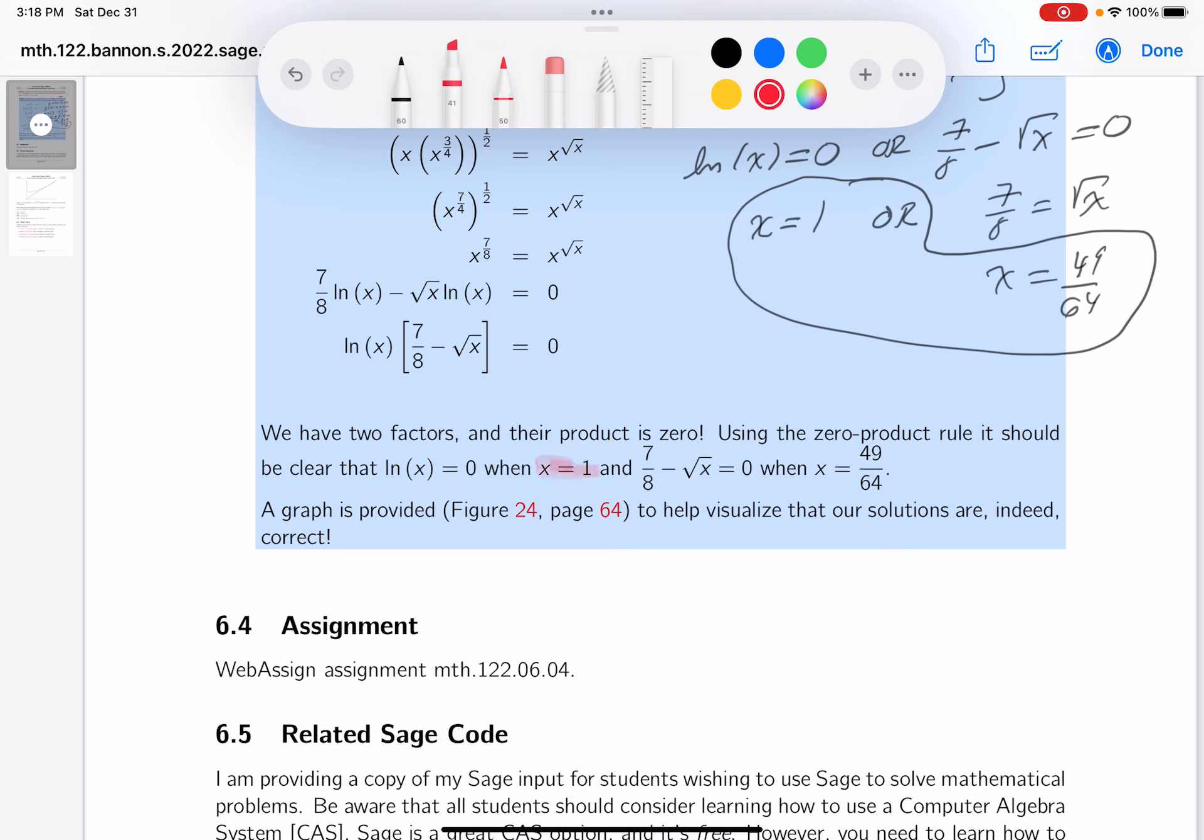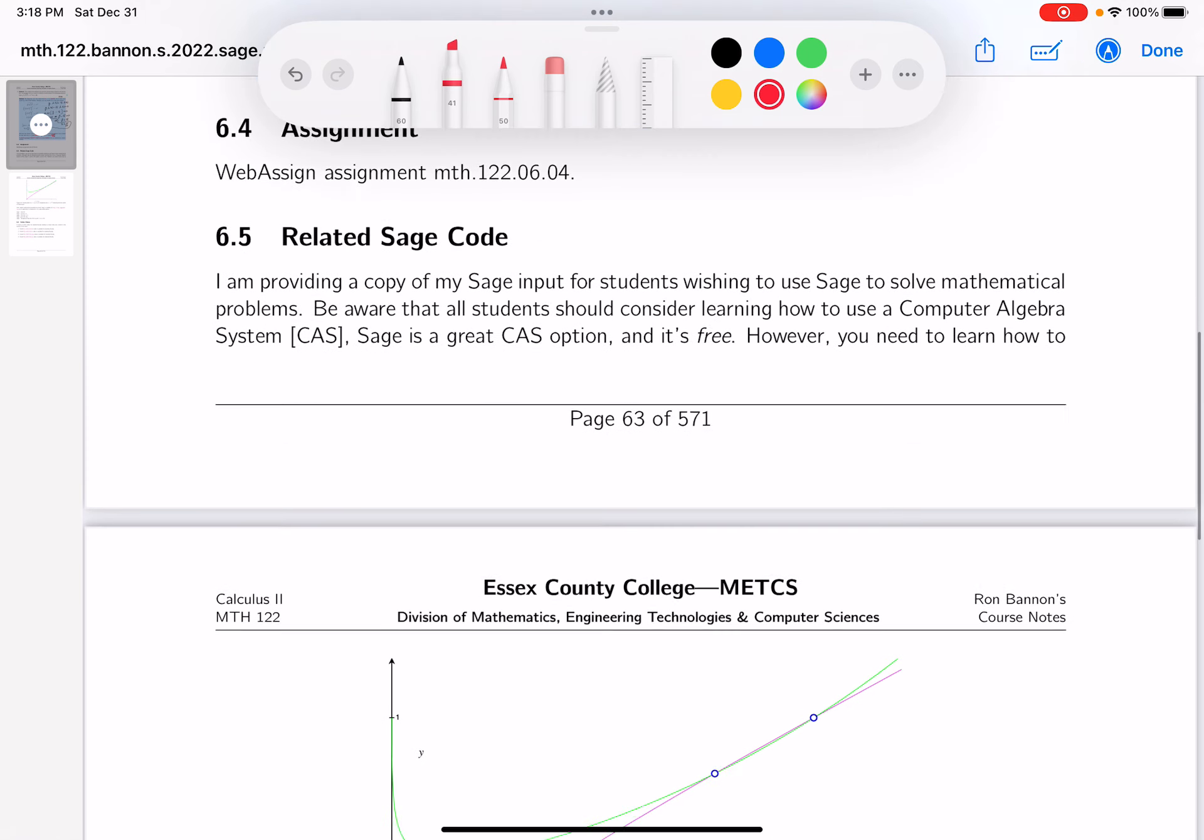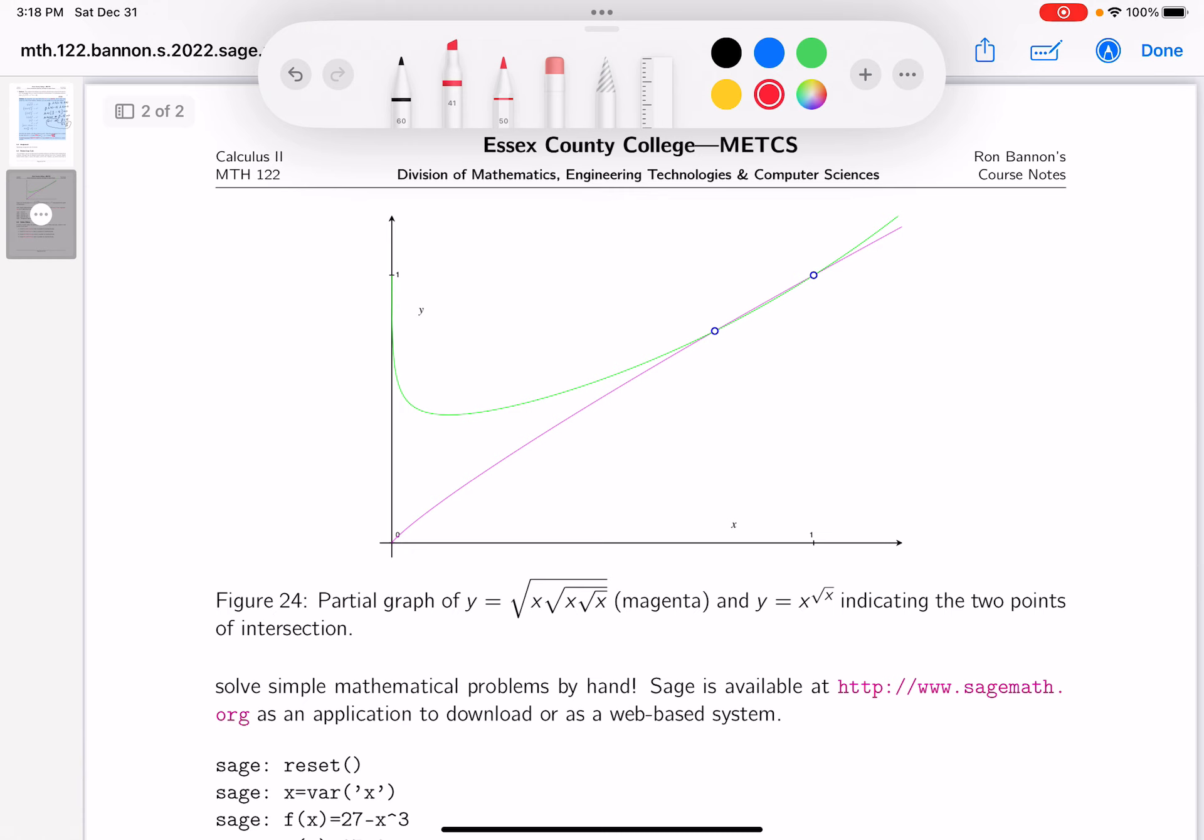Also emphasizing the key there's certainly answers if you're just stabbing around for the answers. I also provide a graph, though. It's to help visualize the solutions or what I expect, all right? Let's say figure 24 on page 64. Let's take a look at that. This is the figure here, and let's just talk about it. And we do have something over here. Let me make sure I'm looking at the right thing. The magenta curve. Okay, I see the magenta curve. I see the green curve. I see two points of intersection.